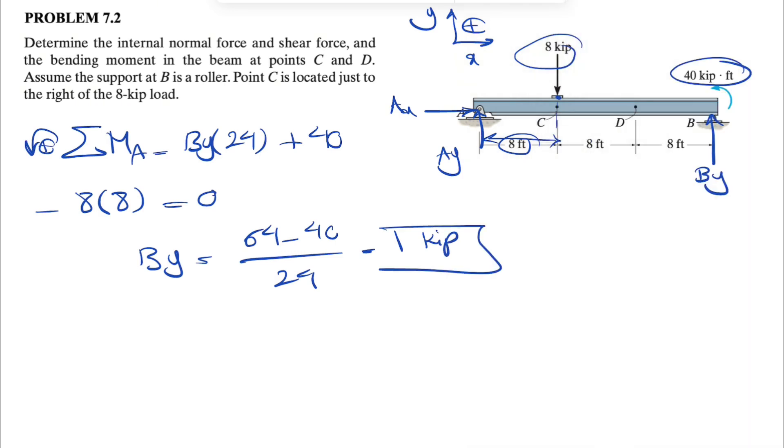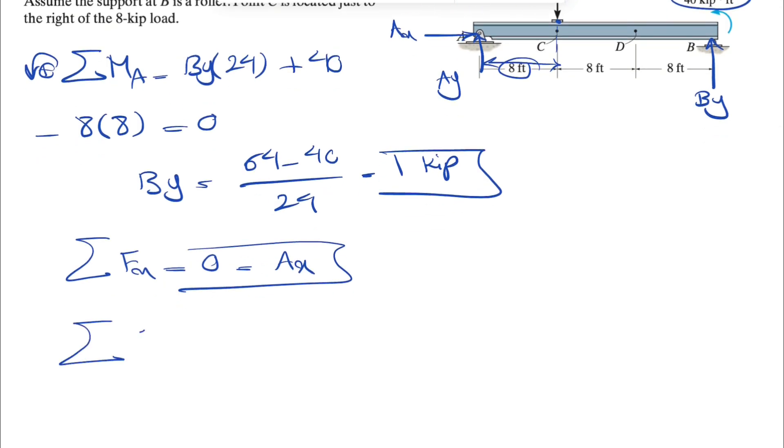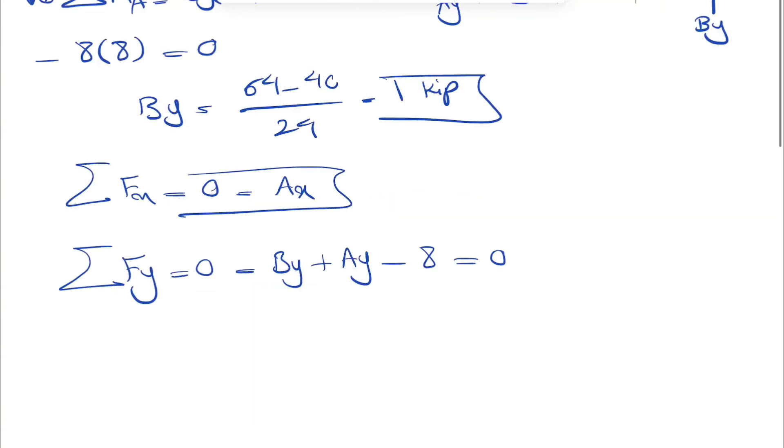As for the first reaction, now we can move on to sum of all forces in x and y equals 0. In our x direction, there's only one component, which is Ax. So Ax is 0. And we're going to do sum of all forces in y equals 0. That's going to be By plus Ay minus 8 equals 0. By is 1, so Ay would be 8 minus 1, or 7 kips.